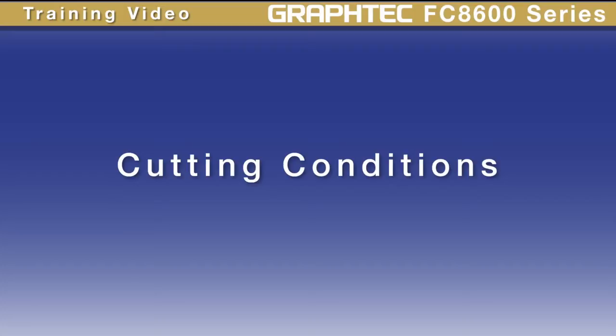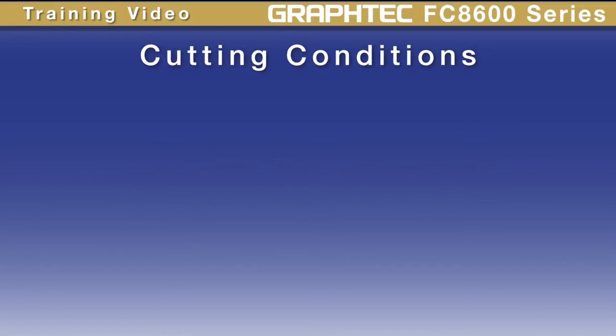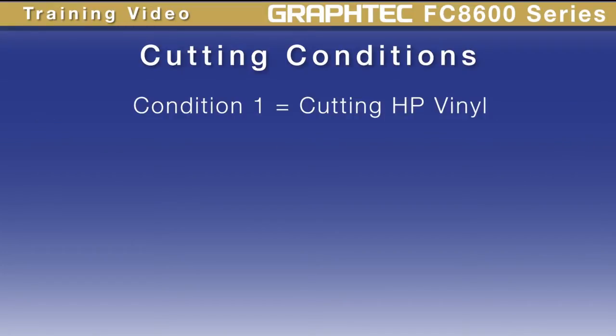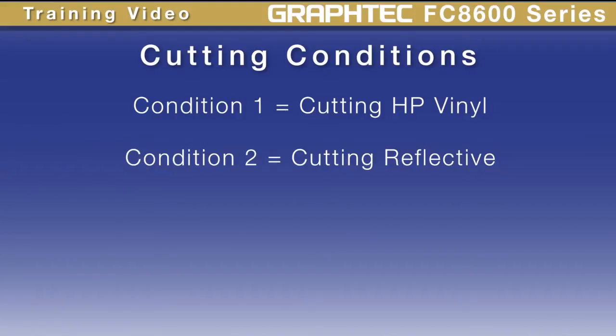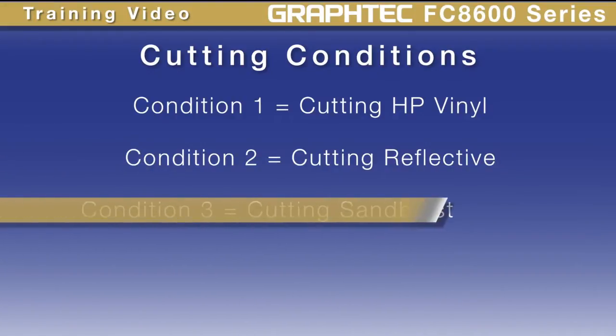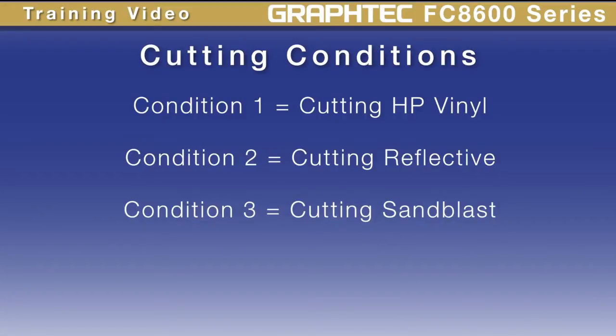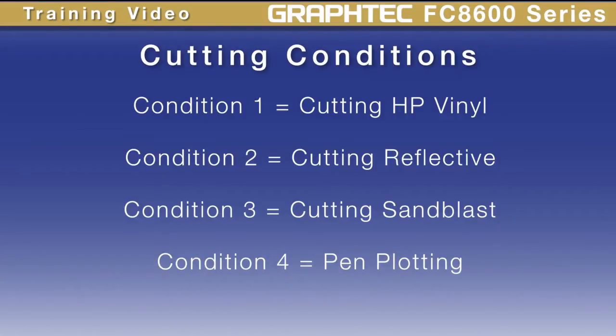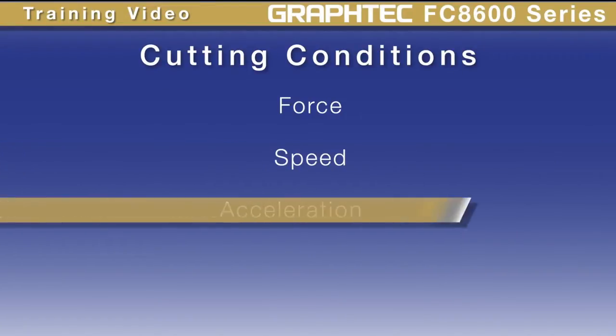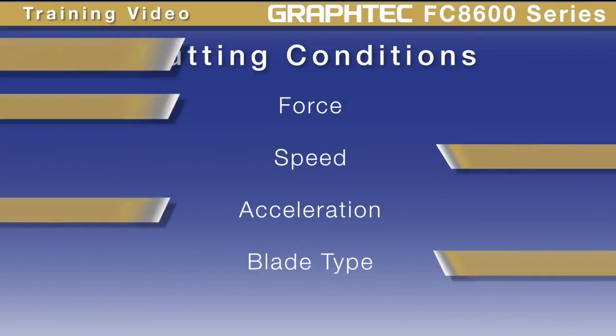In this lesson we'll learn about cutting conditions. Cutting conditions are like cutting presets — they can be used to set the plotter to the perfect condition for cutting specific types of material. For instance, condition 1 may be set for cutting high-performance vinyl, condition 2 for reflective vinyl needing higher force, condition 3 for sandblast resist needing slower speed, and condition 4 for pen plotting. The settings within a cutting condition include force, speed, acceleration, blade type, and other settings.